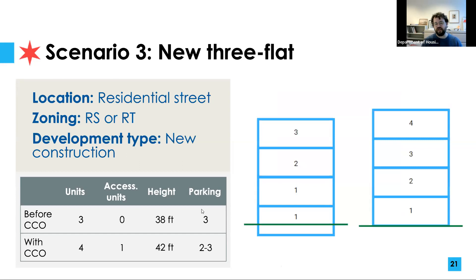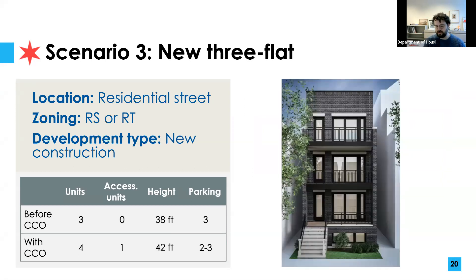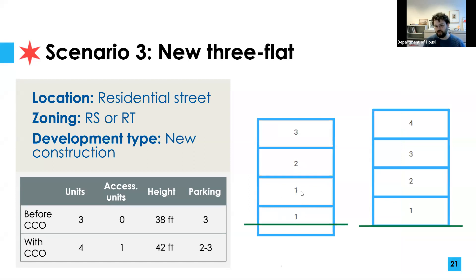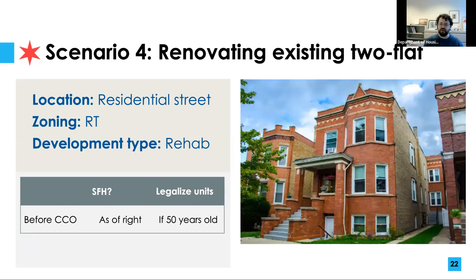We have a diagram showing the existing condition on the left — unit one split between an elevated first floor and half basement, with units two and three stacked above — and the new configuration on the right using this provision, with the half basement lifted flush with the ground, the building slightly taller, and one accessible unit on the ground floor with units two through four above. Finally, rounding out scenario four: what it looks like to renovate an existing two-flat under Connected Communities versus prior zoning law.